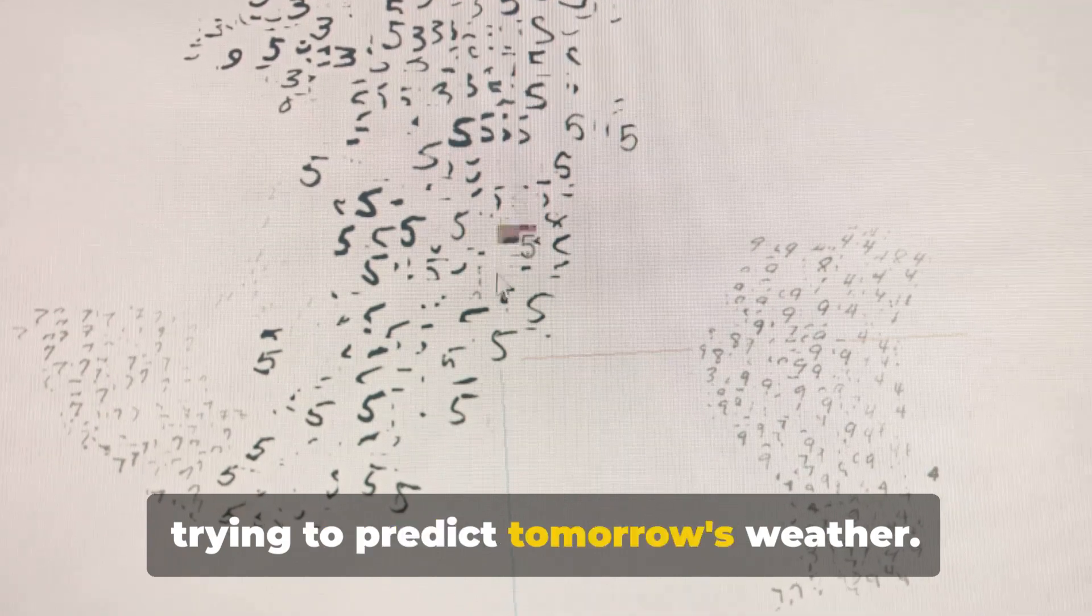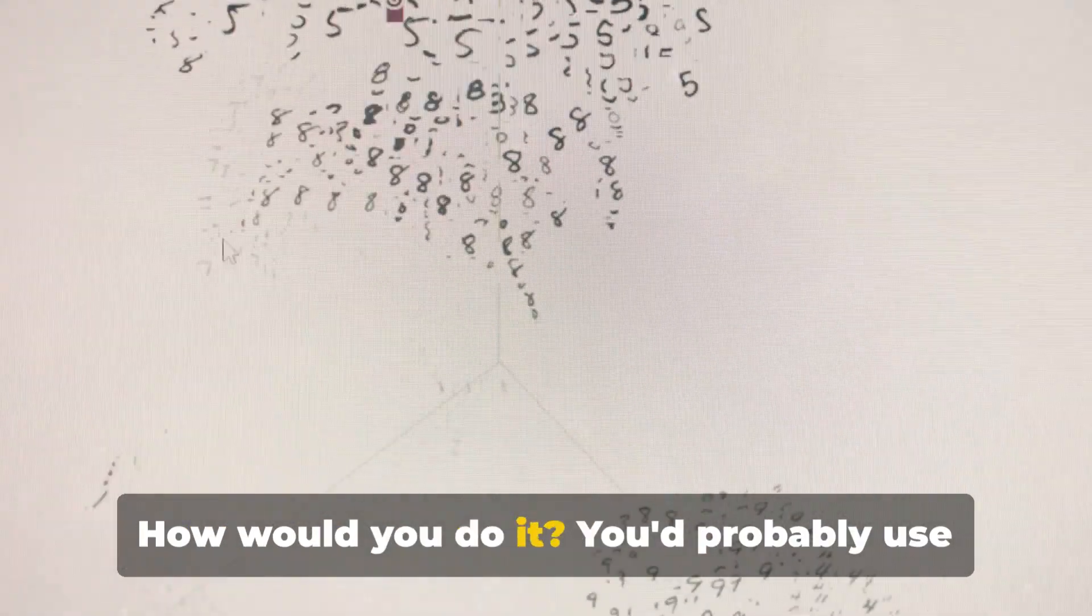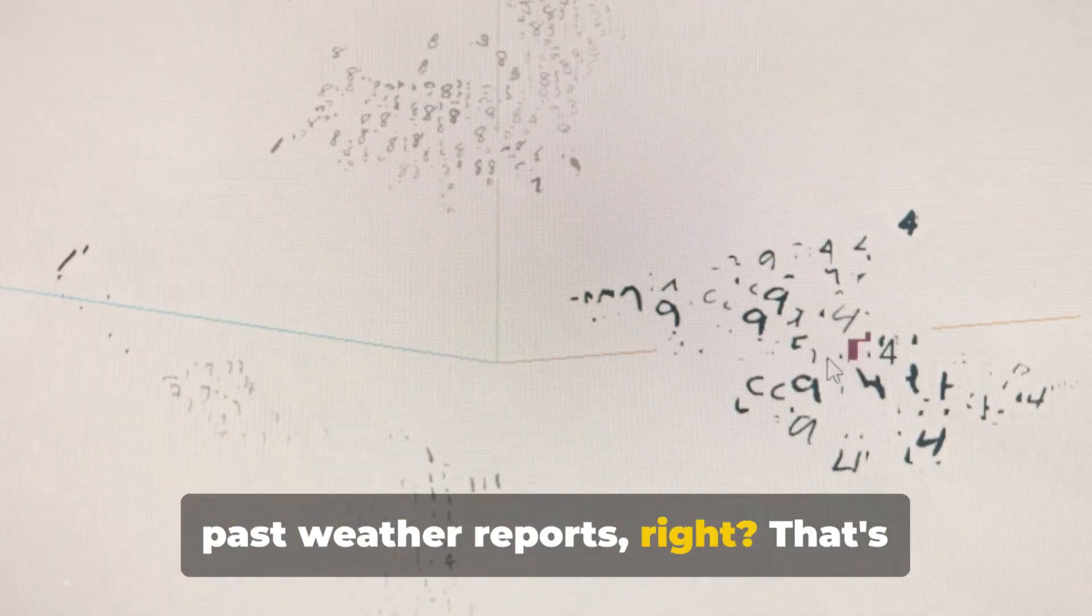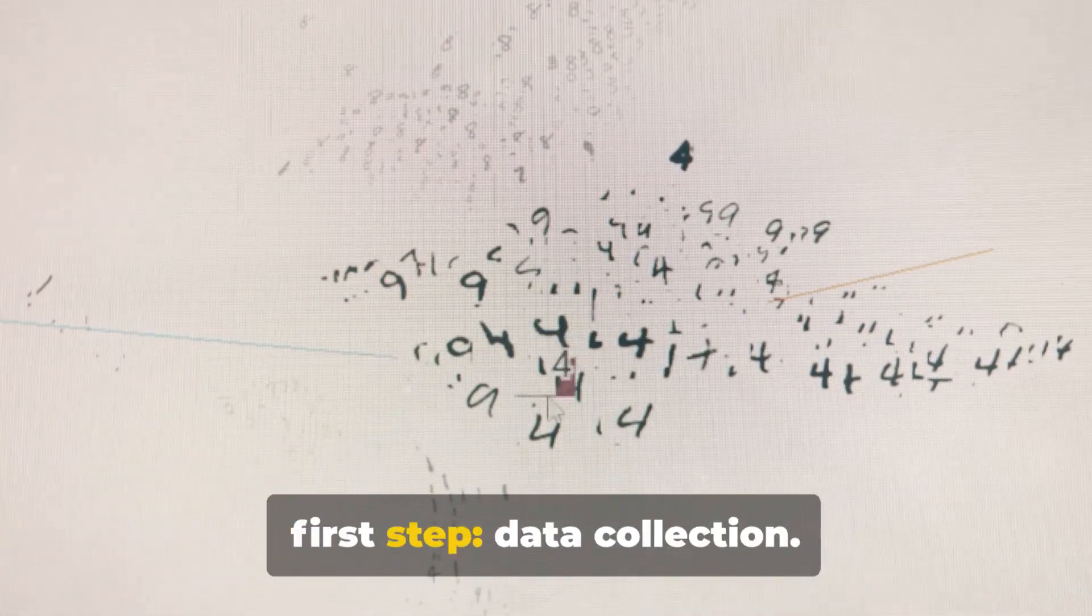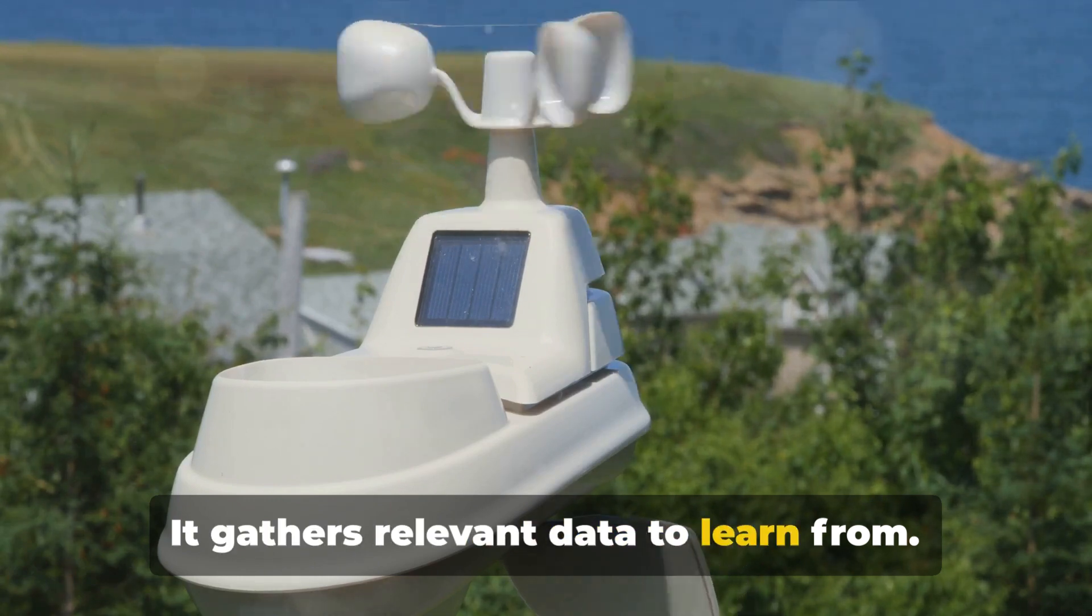Imagine you're trying to predict tomorrow's weather. How would you do it? You'd probably use past weather reports, right? That's exactly what machine learning does in its first step: data collection. It gathers relevant data to learn from.